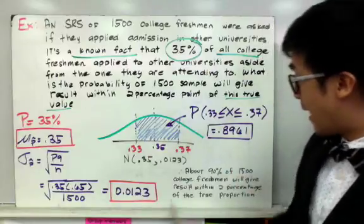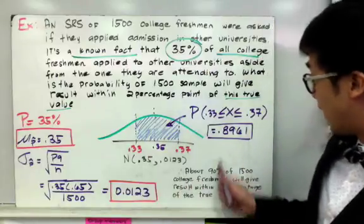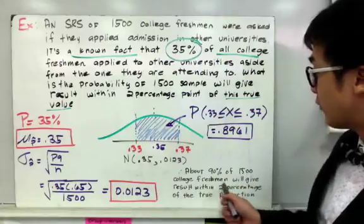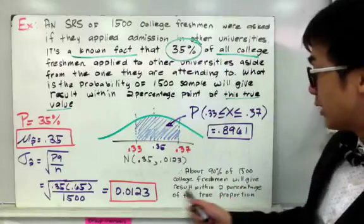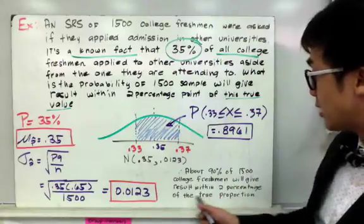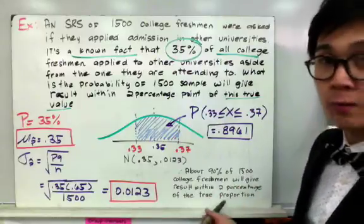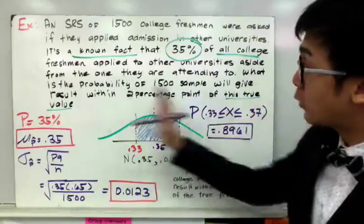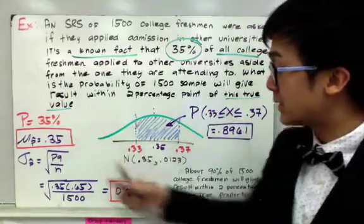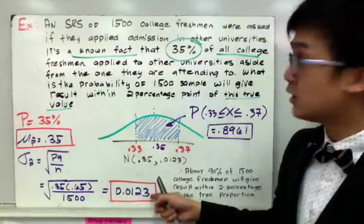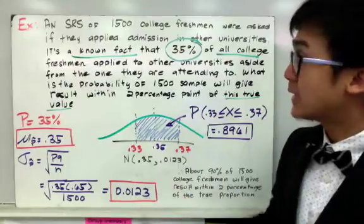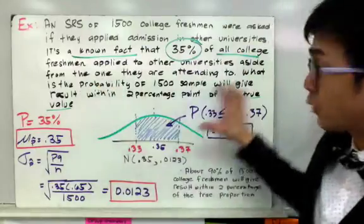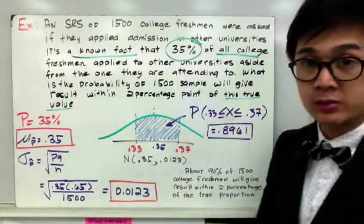Therefore, to answer the question: about 90% of 1500 college freshmen will give results within two percentage points of the true proportion. That is how we use our mean and standard deviation of our sample proportion to answer probability questions similar to this one.